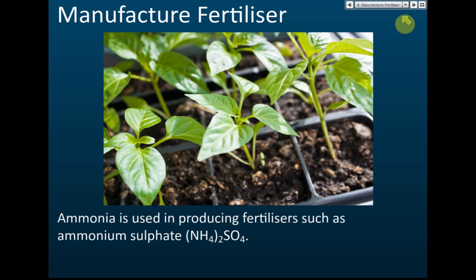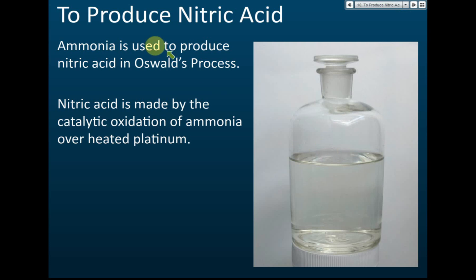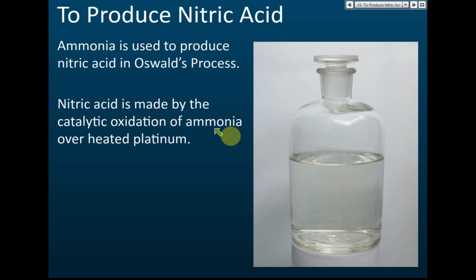The uses of ammonia: first, it is used to manufacture fertilizers — for example, ammonium sulfate is a fertilizer produced from ammonia. Second, ammonia is used to produce nitric acid through the Ostwald process, which involves the catalytic oxidation of ammonia over heated platinum — platinum is the catalyst used.